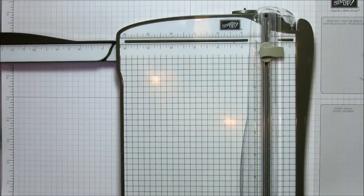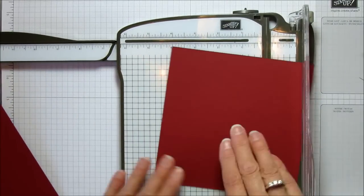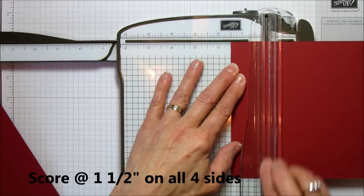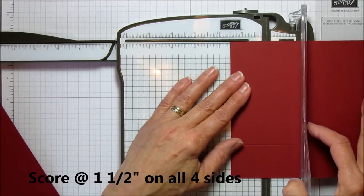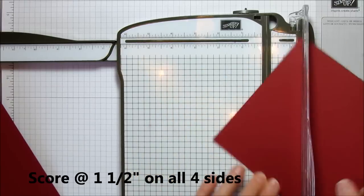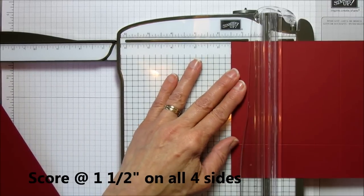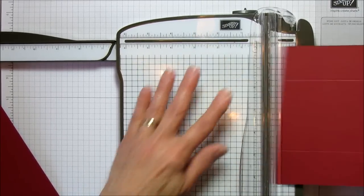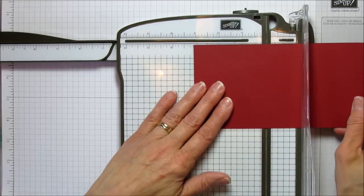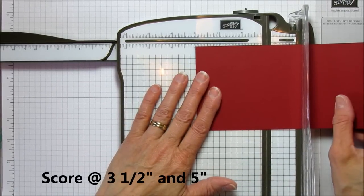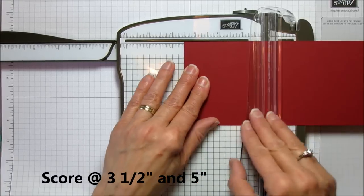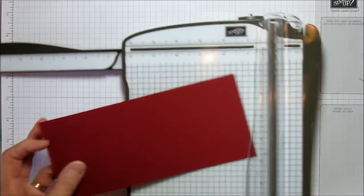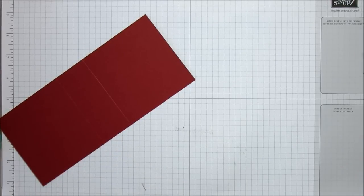Let's get started scoring these pieces. On the 6⅛ by 6⅛ piece, we're going to score it at 1½ all the way around. On the other piece, score on the long side at 3½ and then at 5. That's it for scoring.